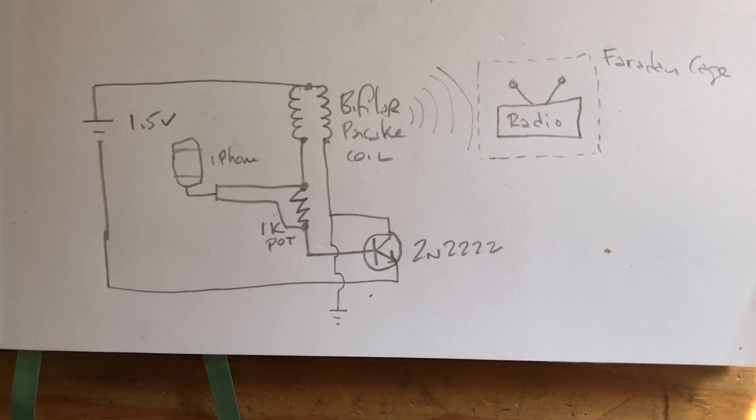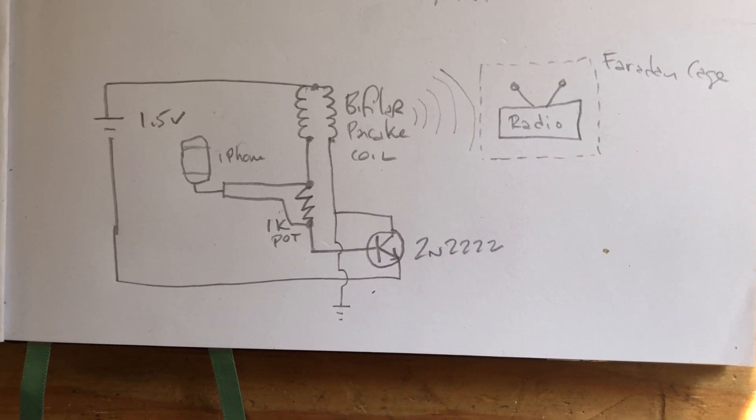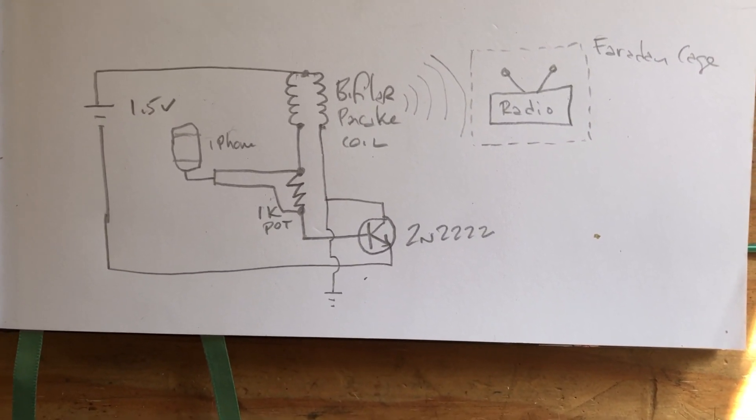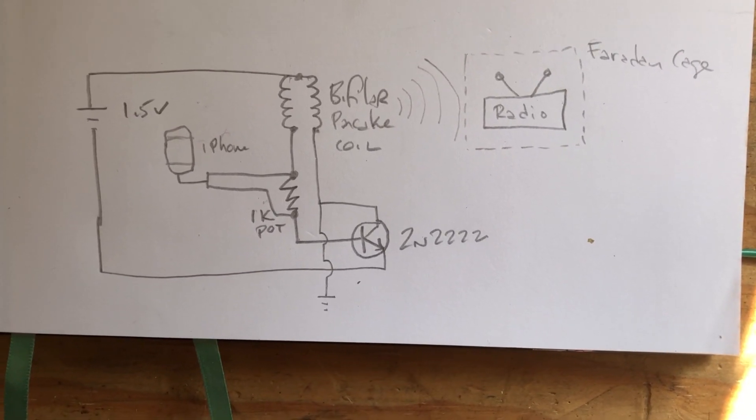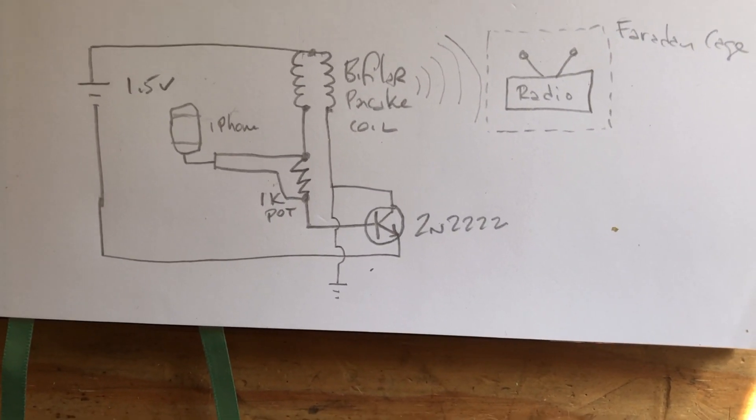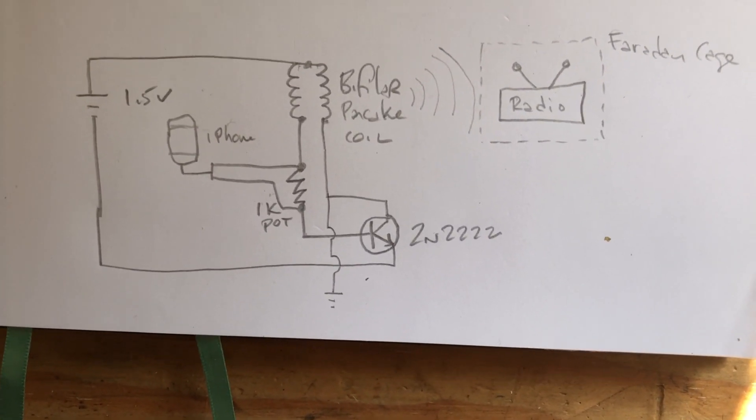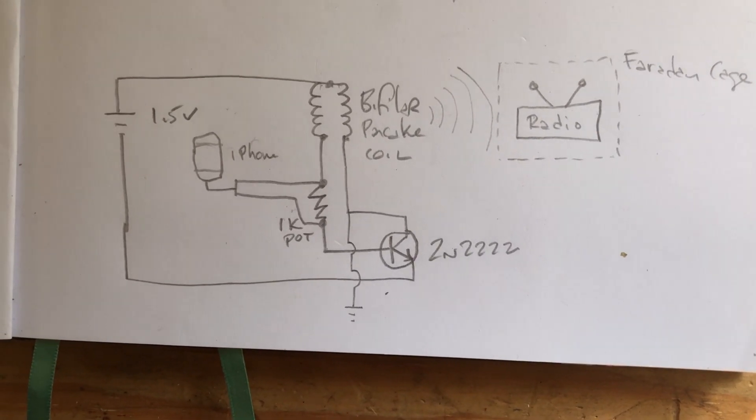Again these are just my thoughts and ideas but as you can see here I have a basic jewel thief circuit and I've added an iPhone in parallel to the potentiometer with a simple oscillator app that is generating an oscillation that is being picked up through the Faraday cage by the radio.